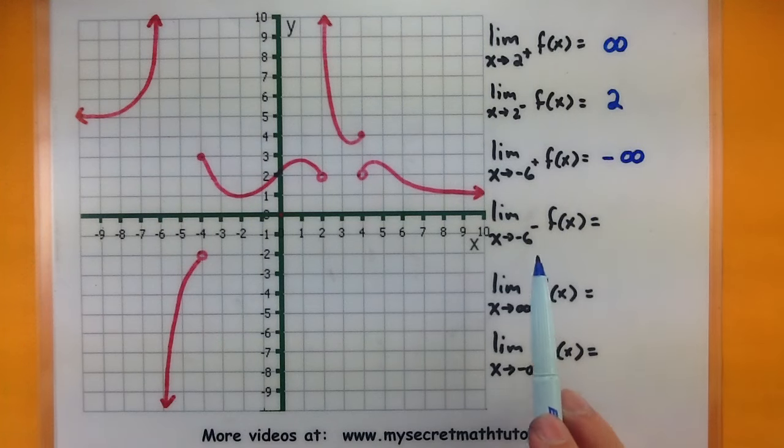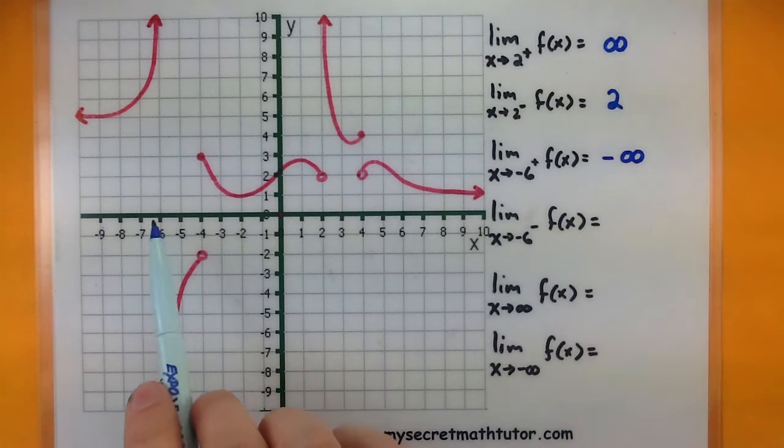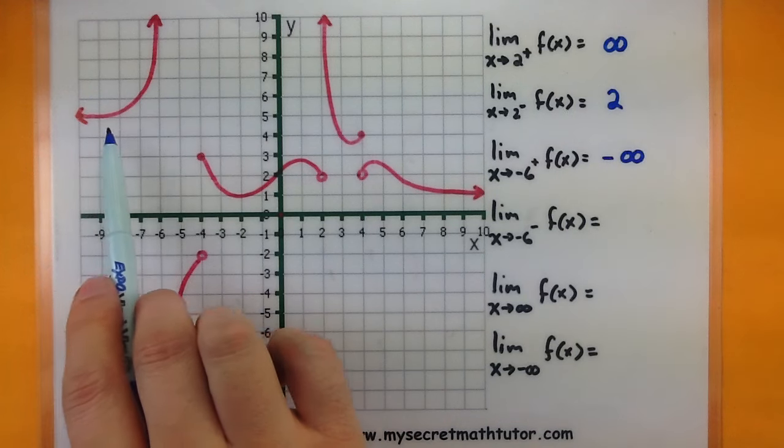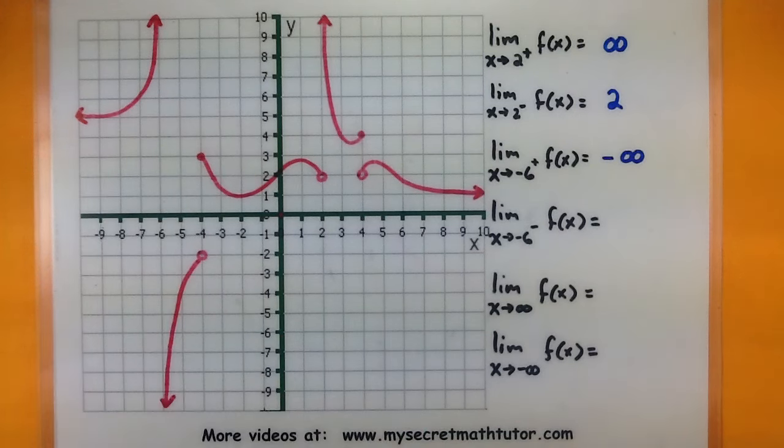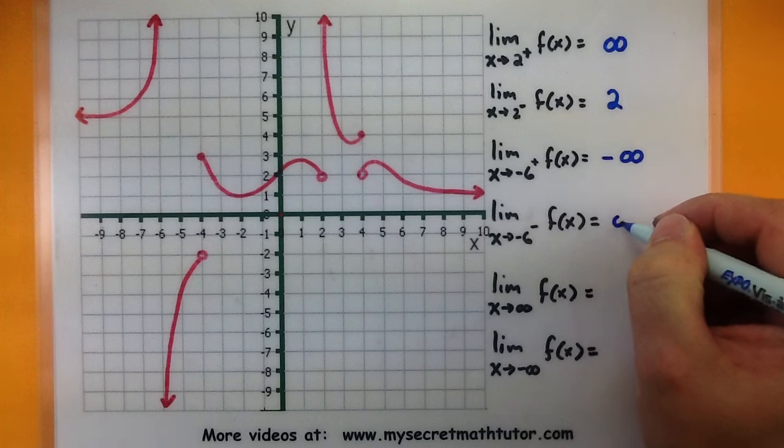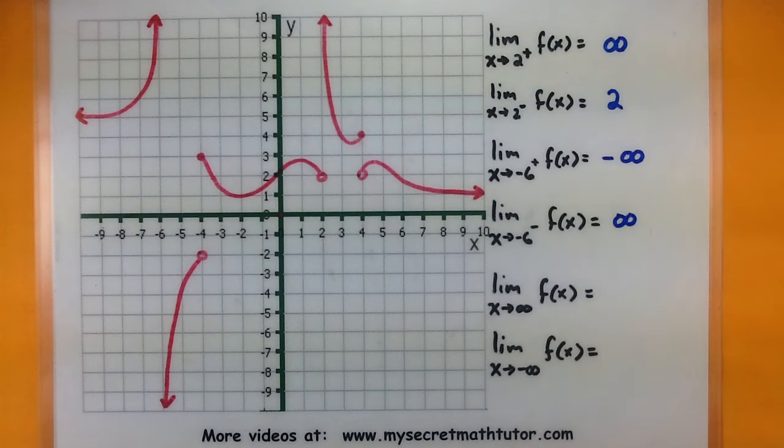Let's have x approach -6 from the left side. Here's our -6 again. As we go from the left side, now we're just getting really large. So that one goes towards infinity.